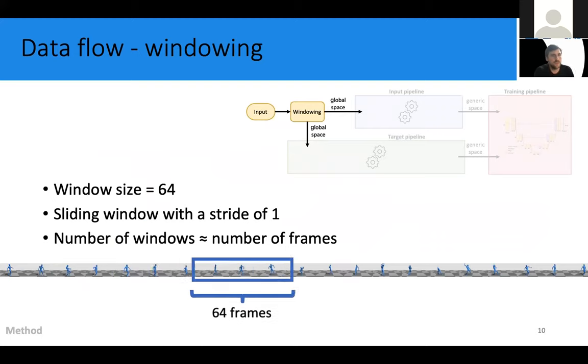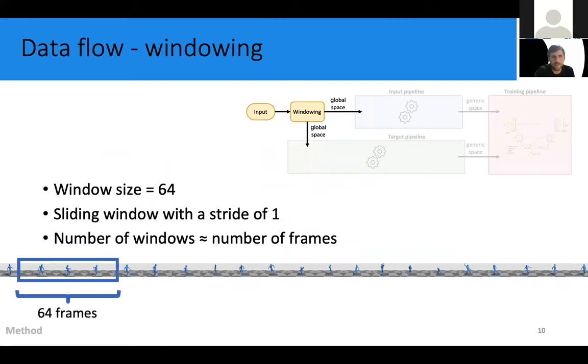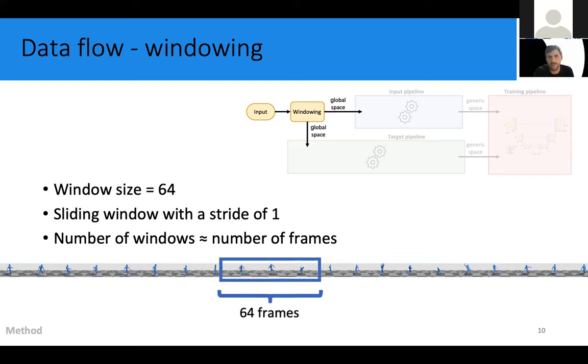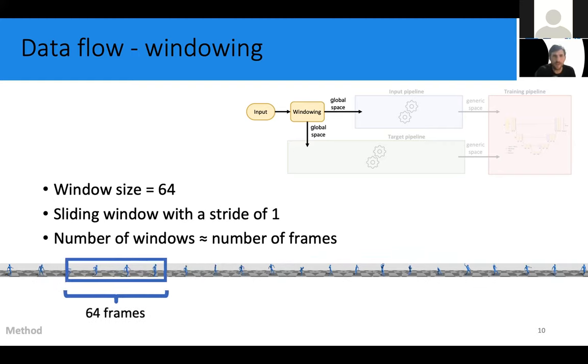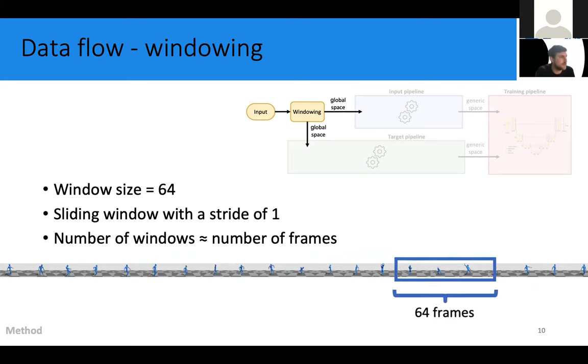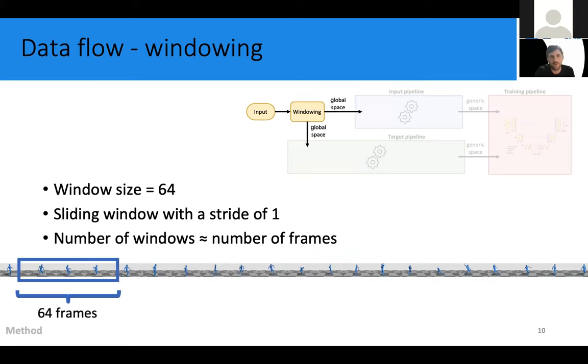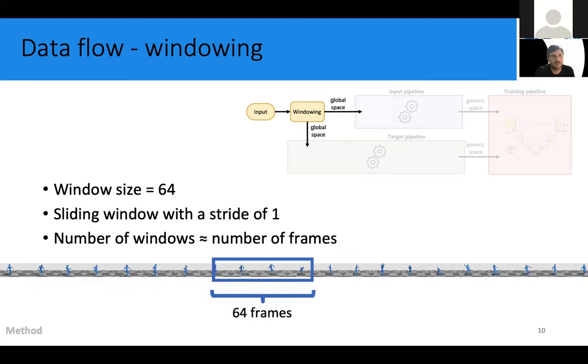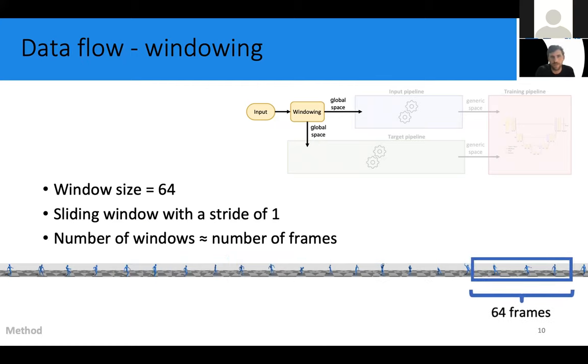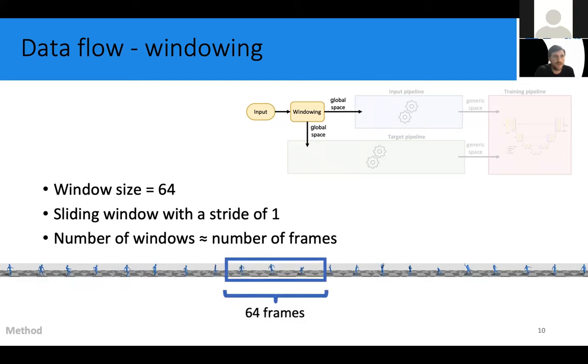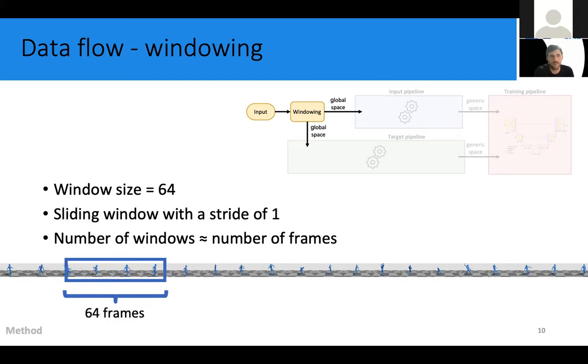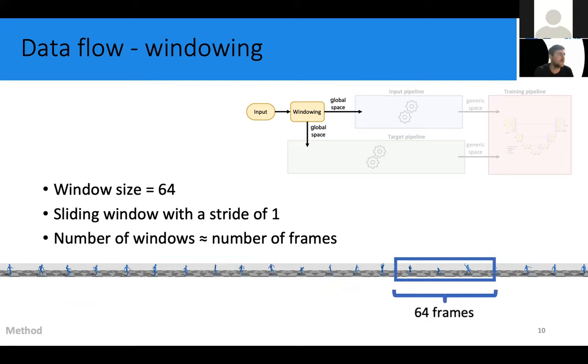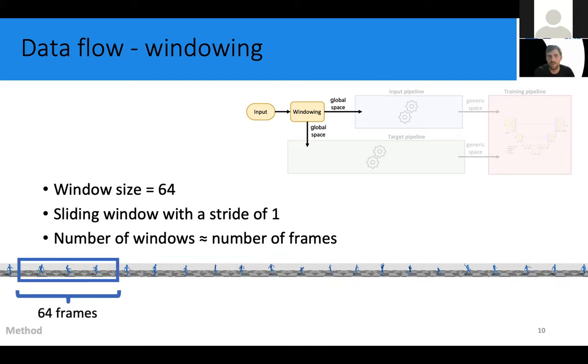So the first step in the preprocessing is the windowing operation. In this operation, we take 64 consecutive frames and collect them into what we call a window. So each window can be seen as a short animation of 64 frames itself. Our windows are created in a sliding manner with a stride of 1, so this means that each frame appears in 64 consecutive windows.